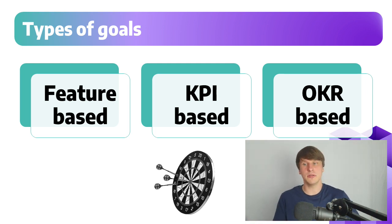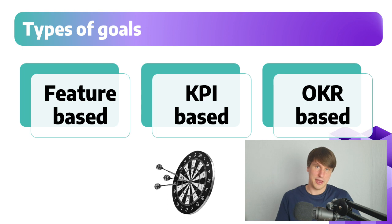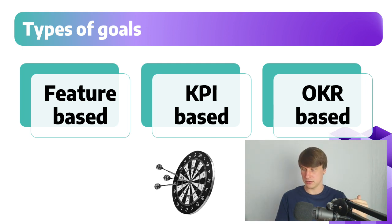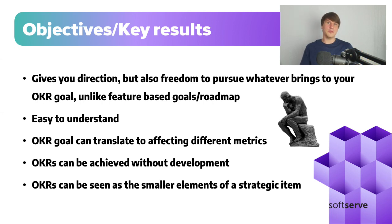KPI goals are more sensible. KPI stands for key performance indicator — like the number of people using video calls in Skype. Those are much better, but a step up from that is OKR-based goals. Objective Key Results. If we go to the vision — it's our destination — to reach our destination we have to have a strategy, and strategic items can have specific milestones we want to achieve in order to clear a part of the strategy. Those will be your OKRs. They give you direction on what to do and what to achieve, but give you freedom to decide on the best means of achieving the goal.